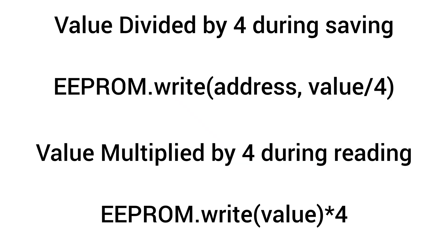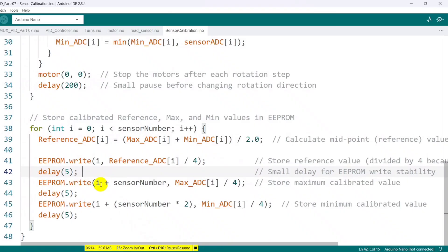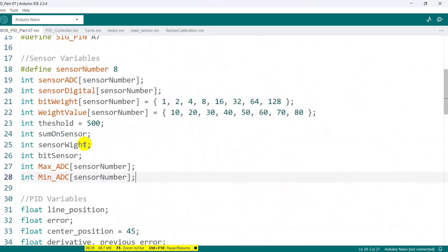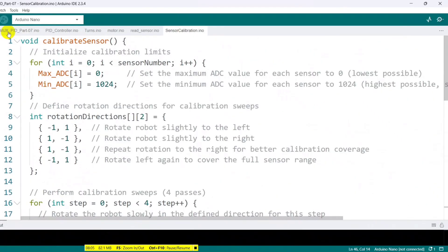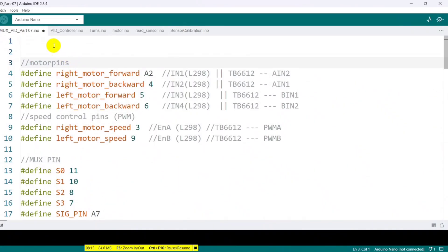Later, while reading from EEPROM, I multiply the stored values by four. Next, I define an array to store the reference values, again based on the number of sensors. At the top of the code, I include the EEPROM library to access the Arduino's built-in EEPROM.